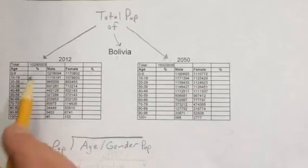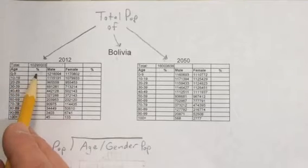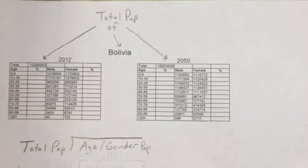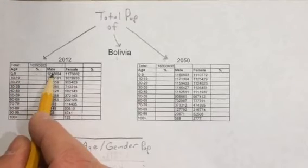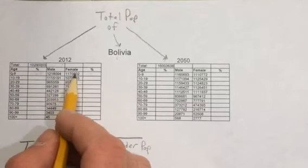What we're going to be doing today is finding the percent of population. Notice there's a percent sign here for the age group based on their male and female population.